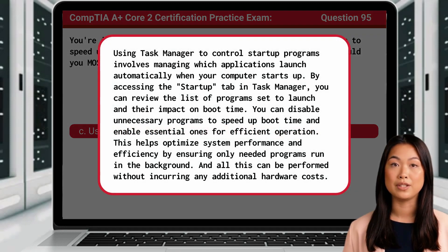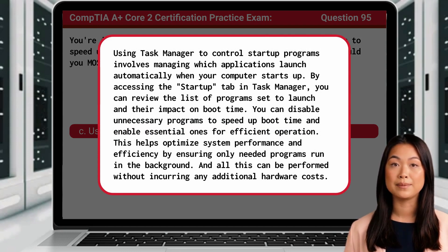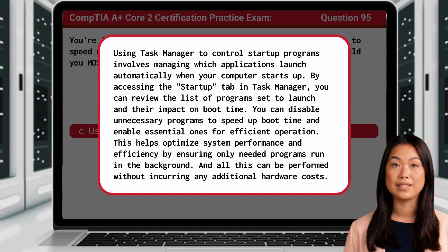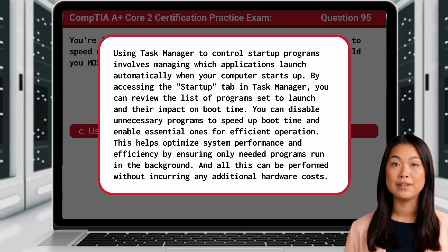Using Task Manager to control startup programs involves managing which applications launch automatically when your computer starts up. By accessing the startup tab in Task Manager, you can review the list of programs set to launch and their impact on boot time. You can disable unnecessary programs to speed up boot time and enable essential ones for efficient operation. This helps optimize system performance and efficiency by ensuring only needed programs run in the background, and all this can be performed without incurring any additional hardware costs.